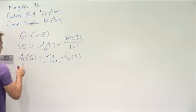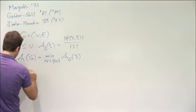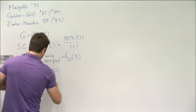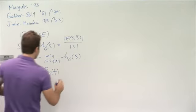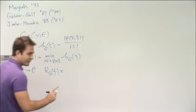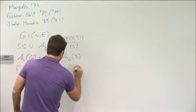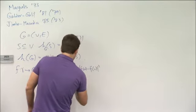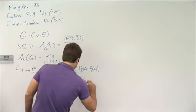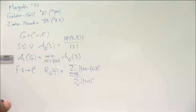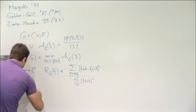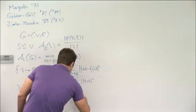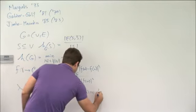Let's also define the corresponding notion for functions. If F is a function from the vertices to the complex numbers, then the Rayleigh quotient — and then the second eigenvalue of the Laplacian of this graph is just the minimum of this Rayleigh quotient over all functions that sum to zero.